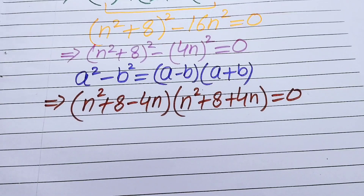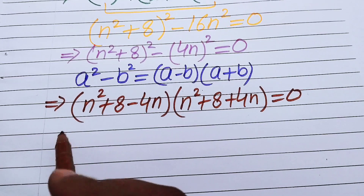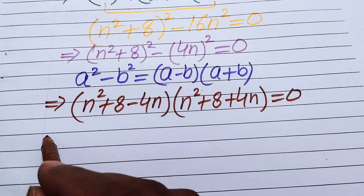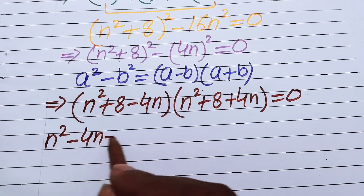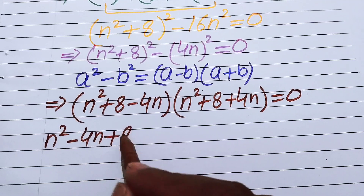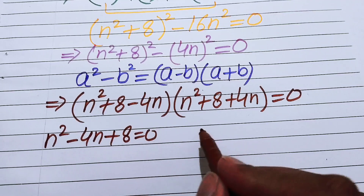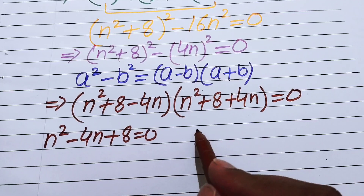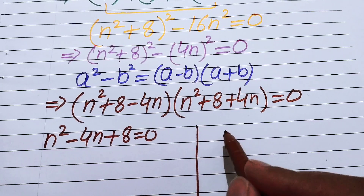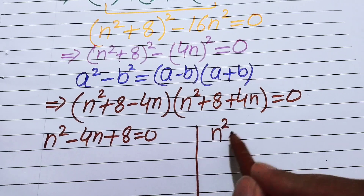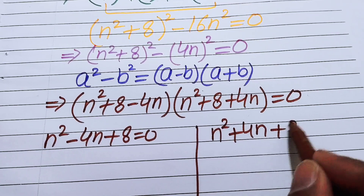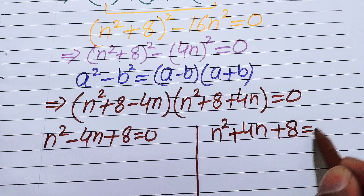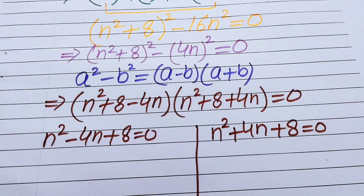Setting each factor to zero gives us two cases. Case 1: n² − 4n + 8 = 0. Case 2: n² + 4n + 8 = 0. We will solve both cases using the quadratic formula.